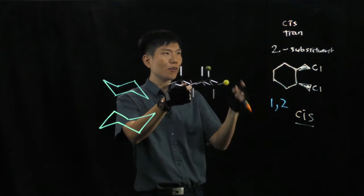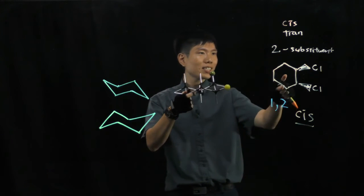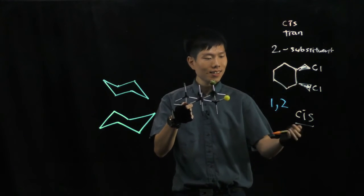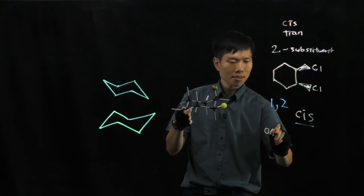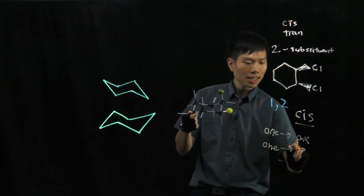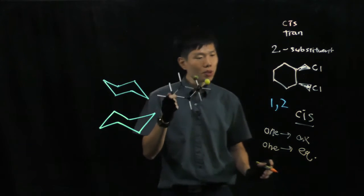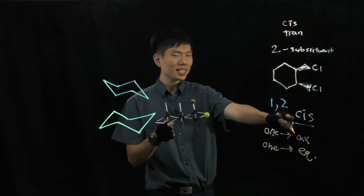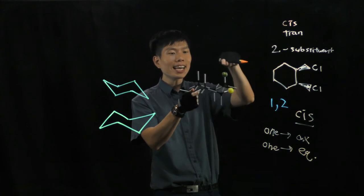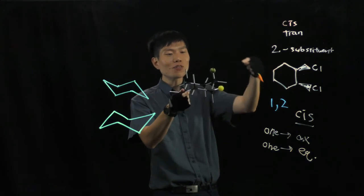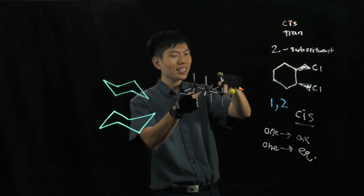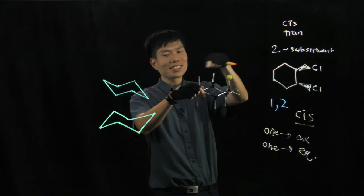So at any point of time, for a chair conformer in a cyclohexane, disubstitutions 1,2 and the cis, one of them must be axial, the other one must be equatorial, which means to say that for 1,2-cis disubstitution, you cannot avoid the 1,3-diaxial interaction because at any point of time, you must have one of them in the axial position, if not from here, then it will be from the other one.